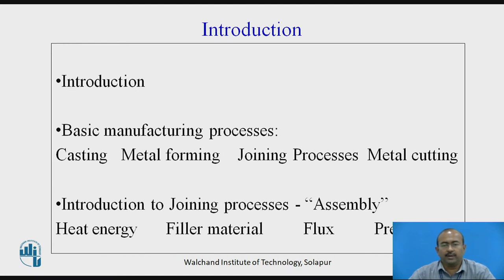As we know, to produce any single element in individual form or to make an assembly, we require to choose one of the basic manufacturing processes like casting, metal forming, joining processes, or metal cutting processes. When we want to make an assembly, we go with joining or welding processes. Joining or welding is nothing but making a permanent bond between two or more elements by means of heat energy, filler material, flux material, and pressure — all four or few of them, as per the particular type of welding process.